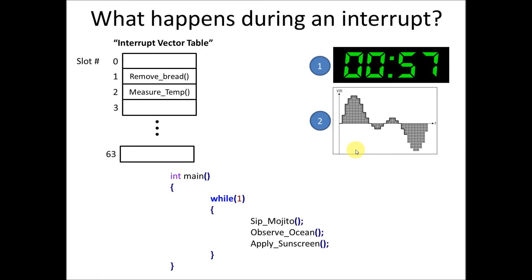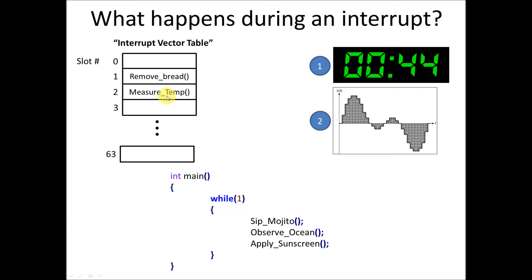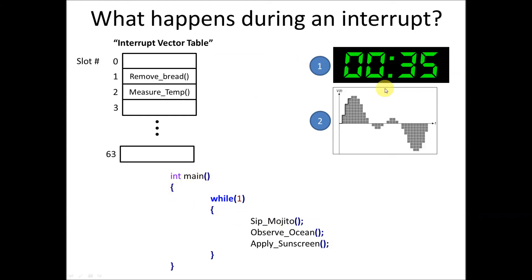Here's an example of what happens during an interrupt, continuing with the deaf baker. We've got our interrupt vector table with 'remove bread' and 'measure temp,' and two interrupt sources — there are up to 63 in our system, but these are just examples. When the timer ticks down all the way, interrupt 1 will be triggered. In the meantime, the hardware is doing all of this independently of what the main program is doing. We've set this up so it runs independently and we don't have to worry about it.